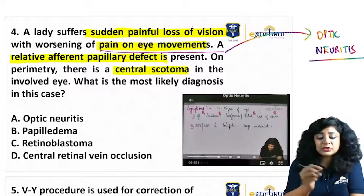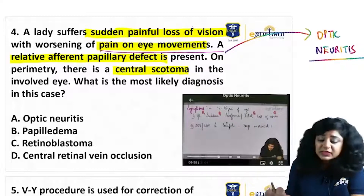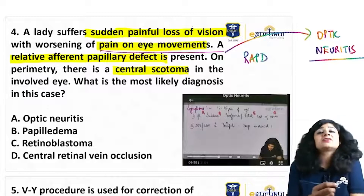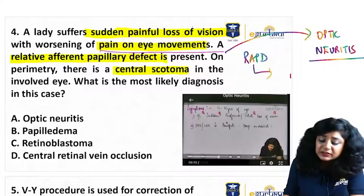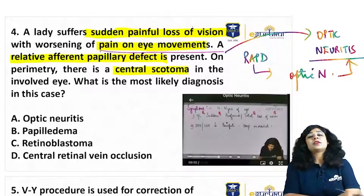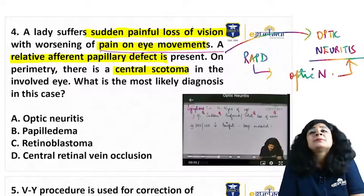There is also sudden painful diminution of vision and pain on ocular movements. They are saying that there is RAPD — that is relative afferent pupillary defect — and the afferent nerve is the optic nerve. This also points towards optic neuritis, and one of the earliest manifestations of optic nerve disease is RAPD.